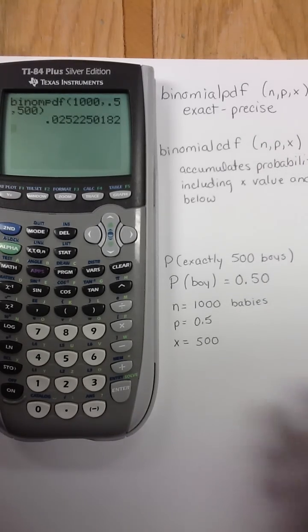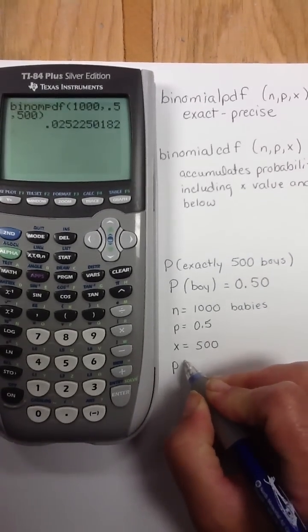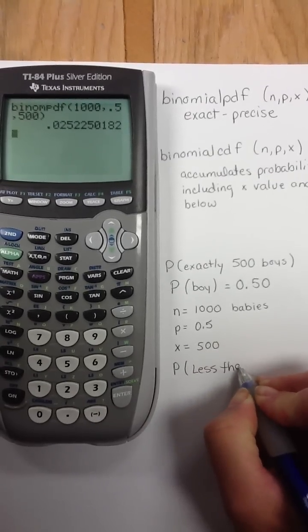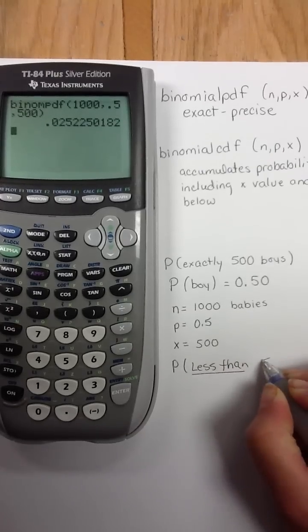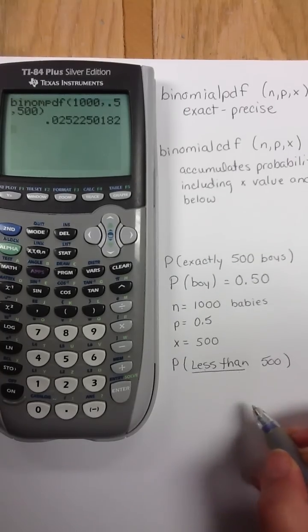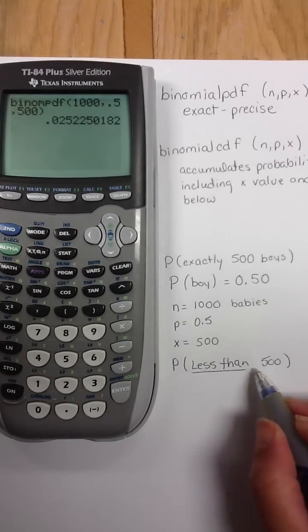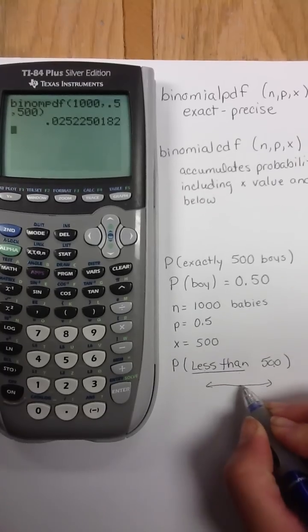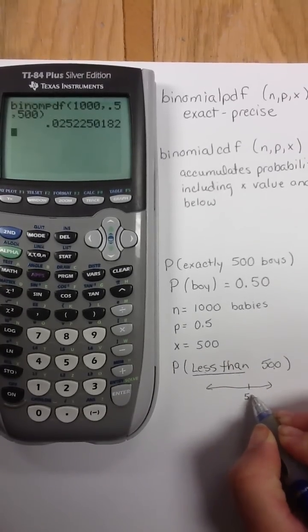Now, if I said, what is the probability of having less than 500 boys? Notice if it says less than 500, 500 is not included. You can always kind of picture a number line. And so, if I'm looking at 500, less than 500 is 499.